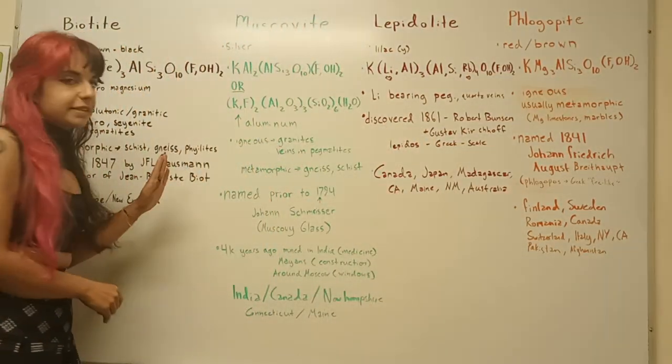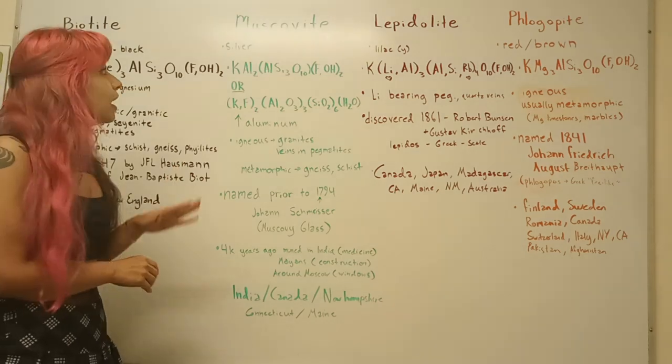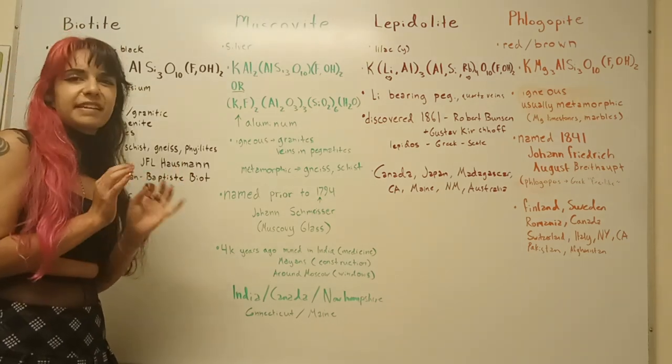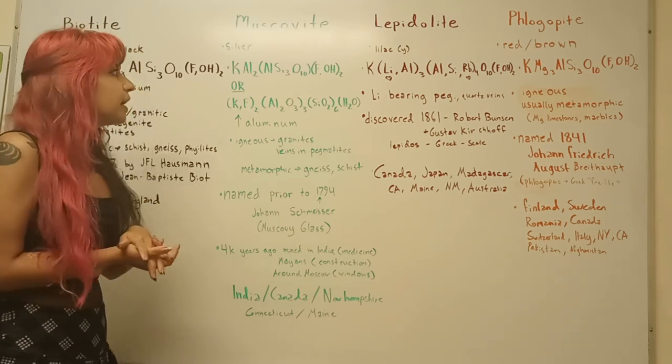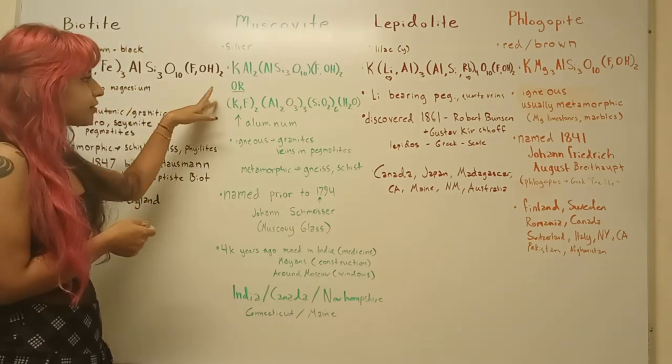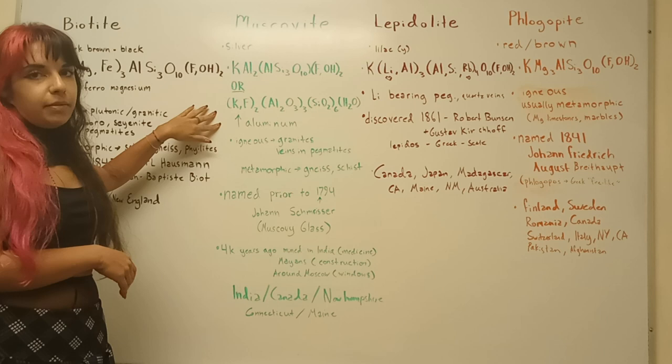Our second one is muscovite. This one is like silver. Some of it has like a little tint of a gold sheen. And then here's our formula. So this is a high aluminum mica.